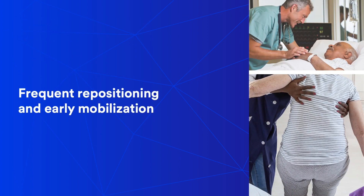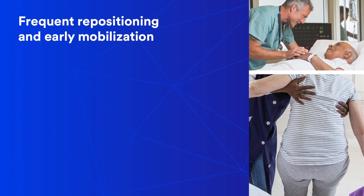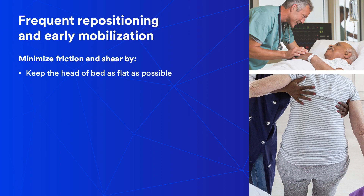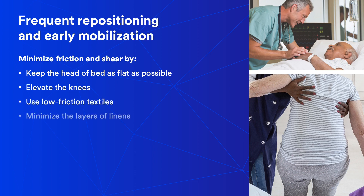Reducing friction and shear is another important concept when creating a positioning plan. Keeping the bed as flat as possible is the first step. Elevating the knees slightly will also prevent sliding down in bed and decrease the pressure on the sacral area. The patient's clinical needs and comfort must be considered when determining position. Use low-friction textiles, minimize layers of linen, and lift the patient to reduce friction and shear. Assistive devices like mechanical lifts and transfer sheets may help with safe, low-friction patient repositioning and transfers.